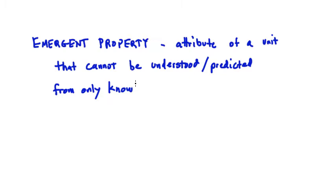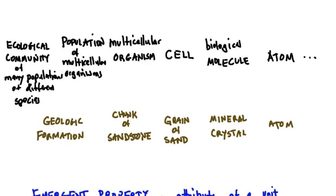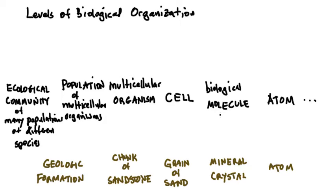Specifically, an emergent property is an attribute of a unit in the hierarchy that cannot be understood or predicted from only knowledge about its components. For example, you could know everything there is to know about all of the individual molecules making up a cell, and yet without knowledge of how the cell functions as a whole, you'd be at a loss to predict its critical cellular behaviors and abilities. These are the emergent properties of the cell.